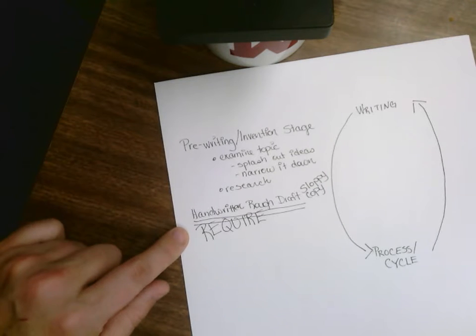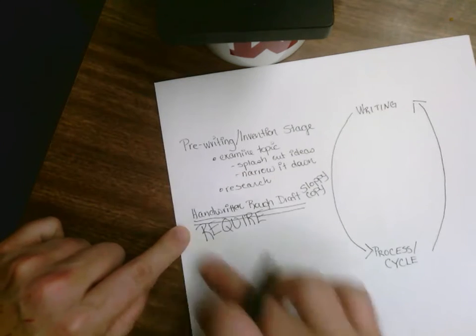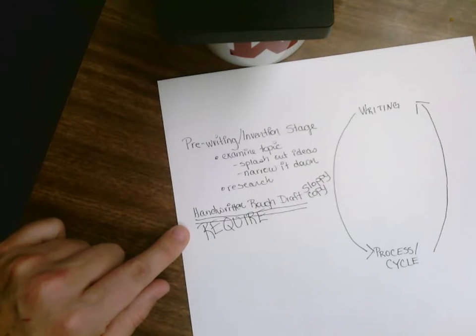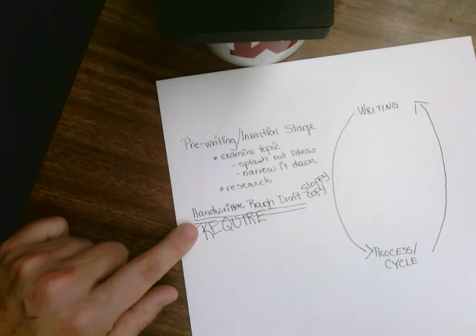If you do not engage in the writing process and keep a handwritten rough draft, none of the rest is going to count. I will not accept your final translation if you do not do the handwritten rough draft. You fail the assignment because I will not give you a final score on your paper until you have engaged in the entire process.